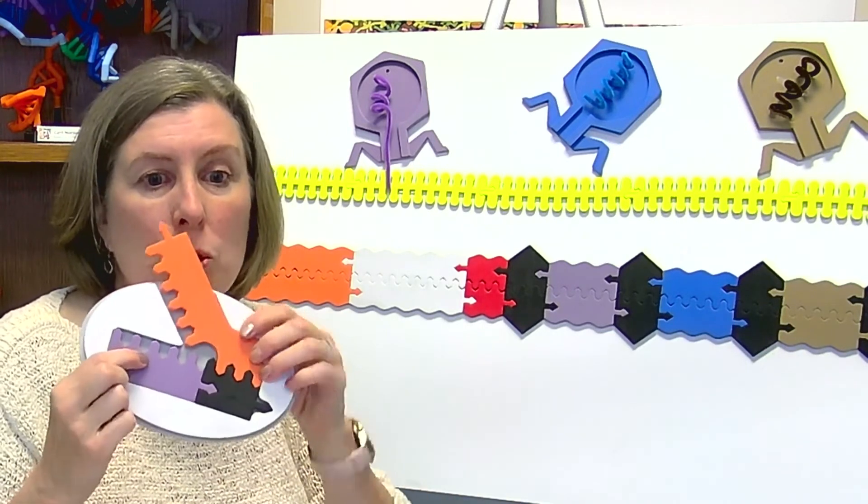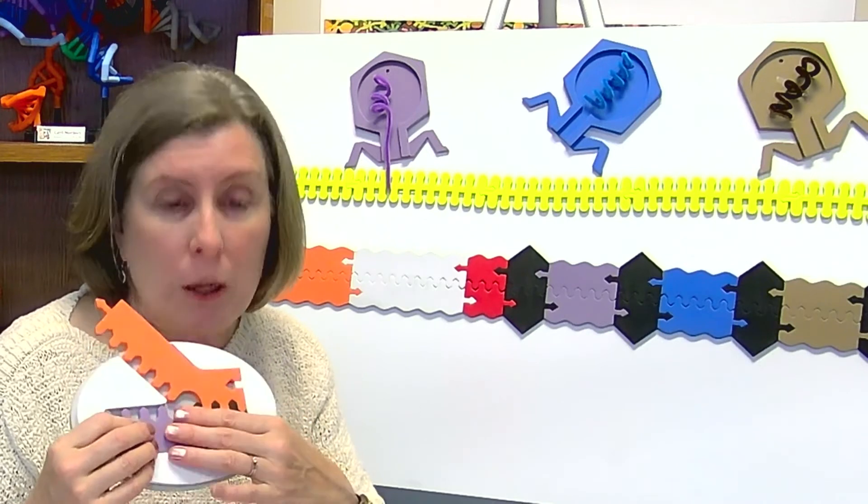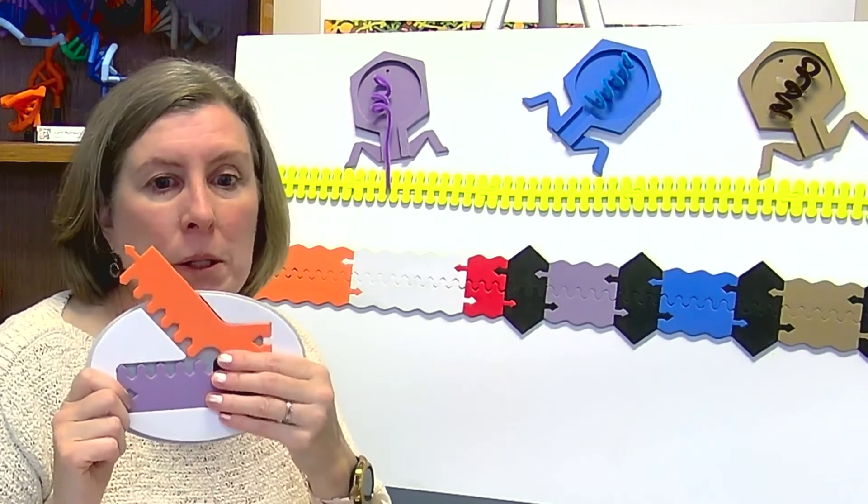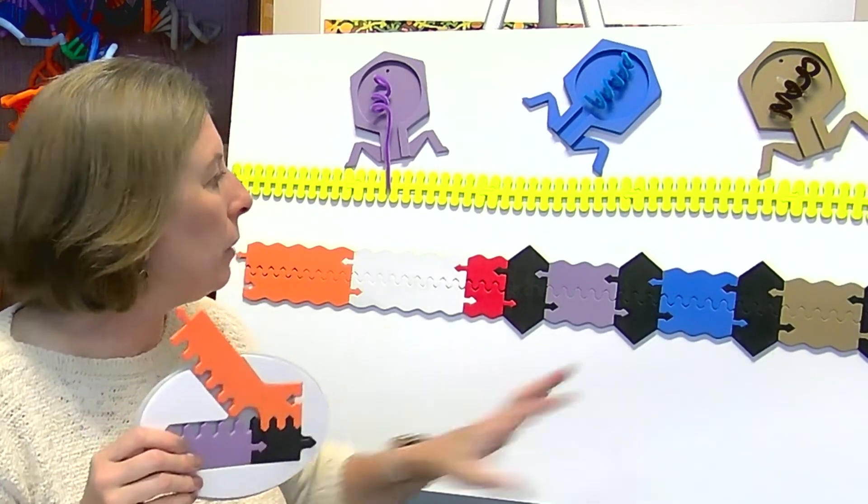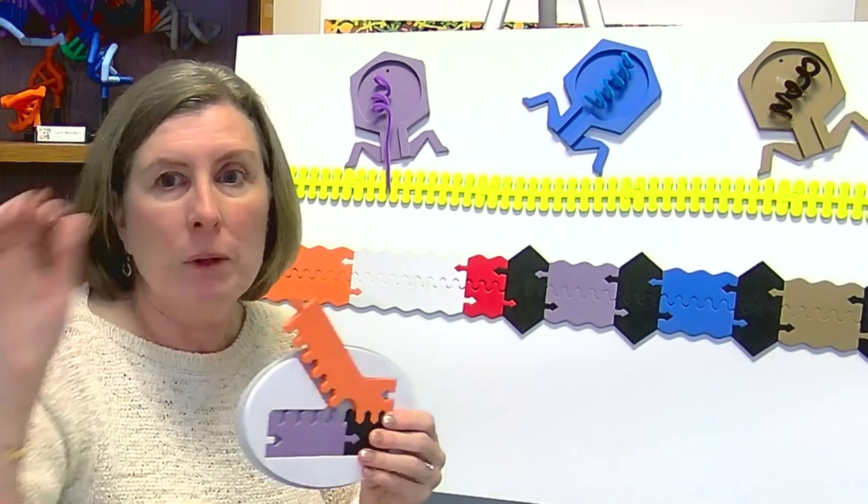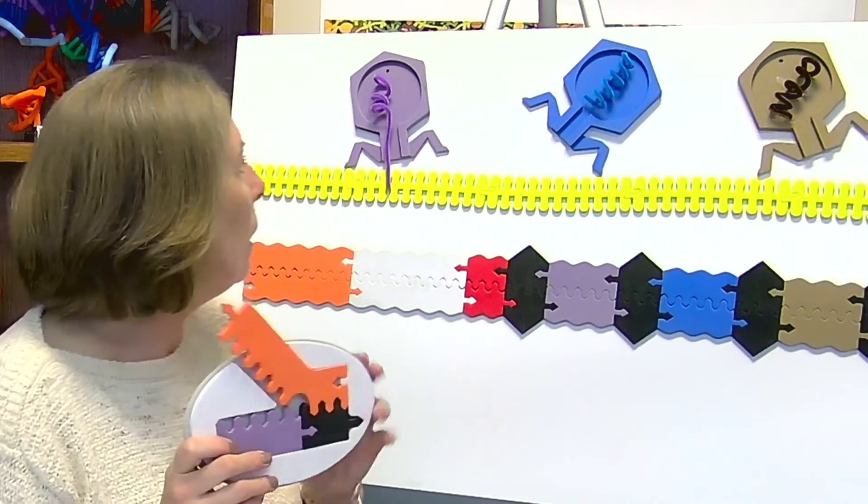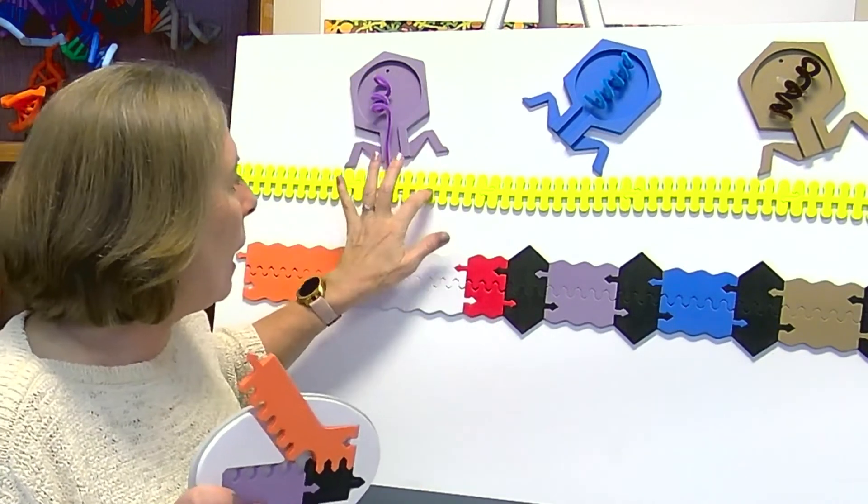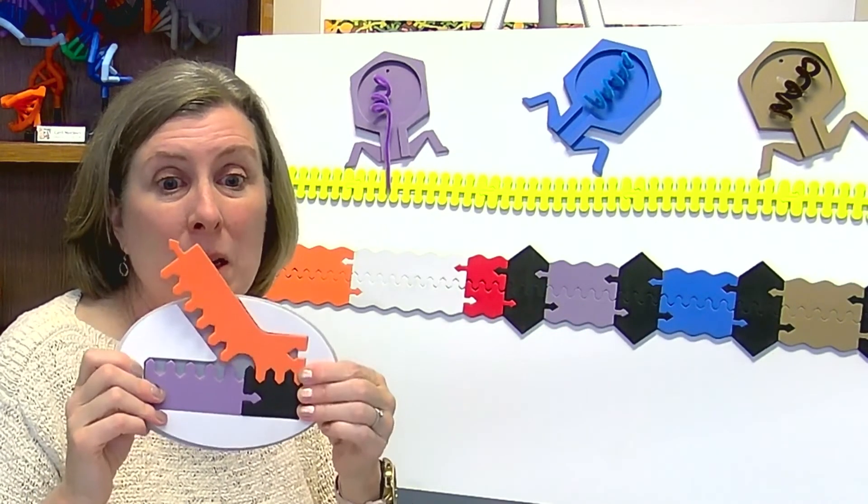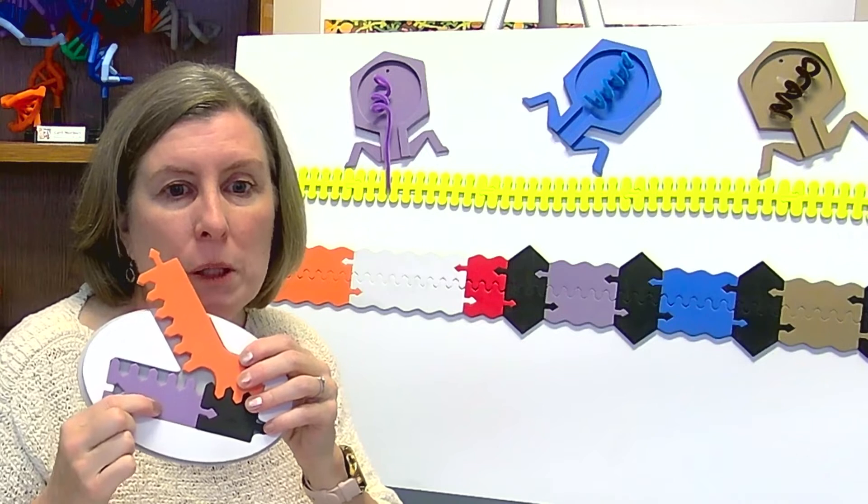When that happens, that allows this Cas9 to be an active surveillance complex, and it can go out and look for a complementary sequence to this viral sequence. This is the complementary sequence because it's been transcribed into the complementary sequence, so it can then bind to a match if it finds it. Understand that there are also surveillance complexes out there with this blue sequence and this tan sequence—there's lots of different ones looking for lots of different viruses. We are just looking at the purple one now because that's just our example.